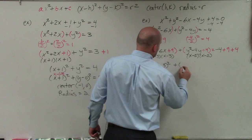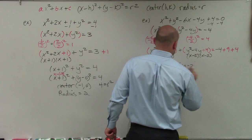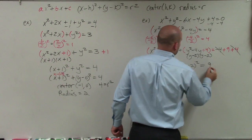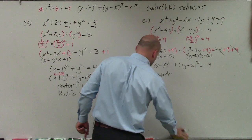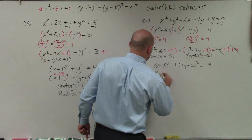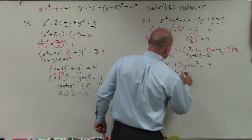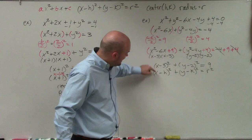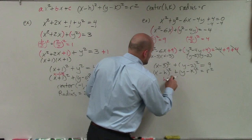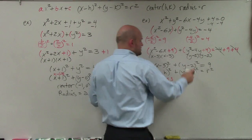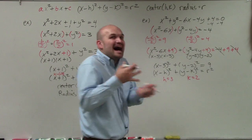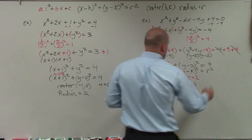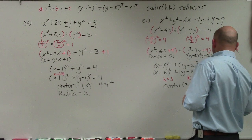Therefore, I have x minus 3 squared plus y minus 2 squared equals 9. The center: remember, it's x minus h squared plus y minus k squared equals r squared. x minus 3, x minus h, h is equal to 3. y minus k, y minus 2, k is equal to 2. It's the opposite, remember that. So therefore, my center is 3 comma 2. And my radius is r squared equals 9, so therefore, r equals 3.